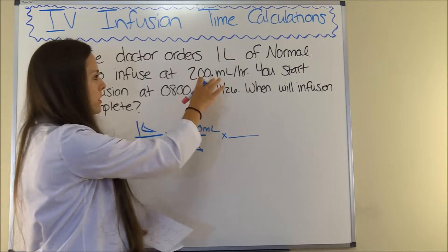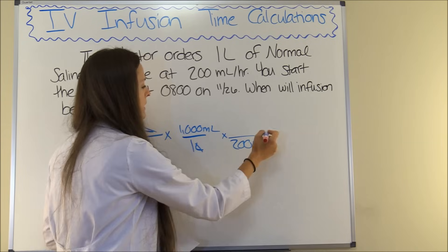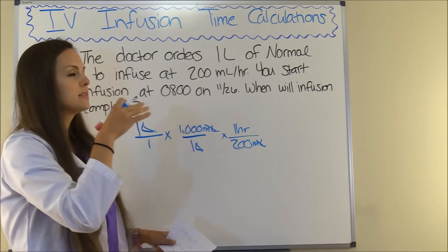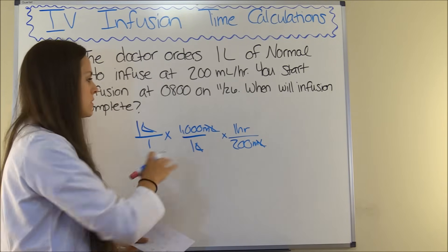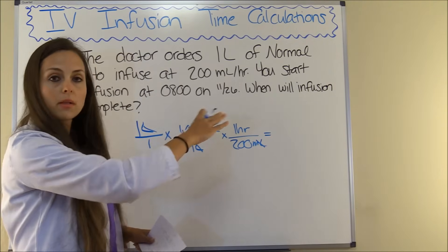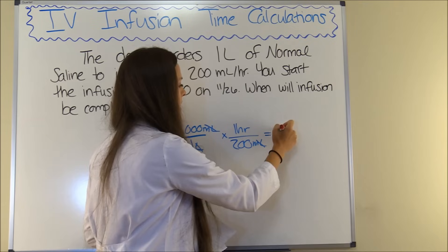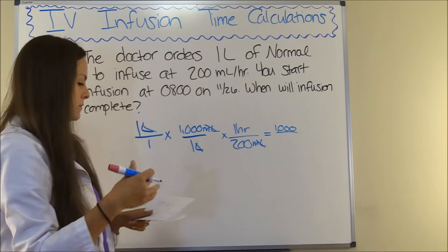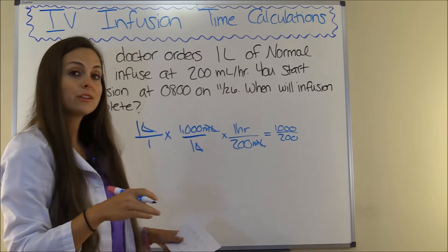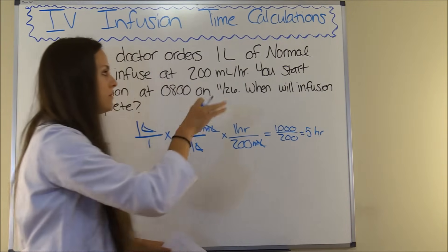Now we are going to be running it at 200 milliliters per hour, so 200 milliliters will be going in over one hour — and that is where we have to get to see how many hours this is going to take to run in. Milliliters cancels out. We're ready to multiply everything at the top and bottom and divide. So 1 times 1,000 times 1 is 1,000, and 1 times 1 times 200 is 200, and 1,000 divided by 200 is 5. It's going to take 5 hours to infuse this.